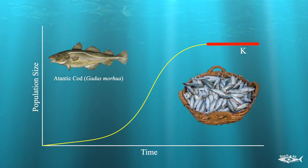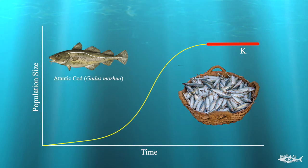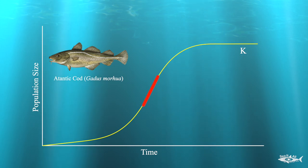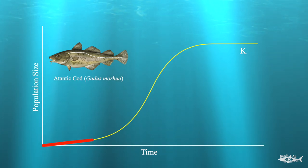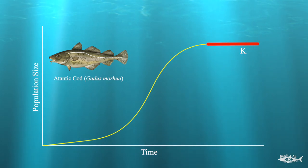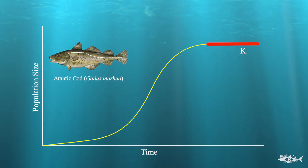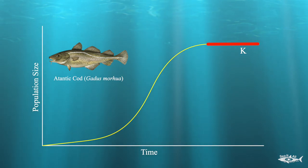That is known as the carrying capacity, or K. Think about it as a basket of fish — the basket can only fit so many fish before they start spilling over. When the cod population is very low, there are not that many individuals reproducing, which means less babies being produced, so the population grows slowly.